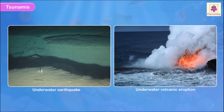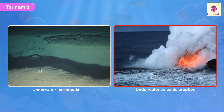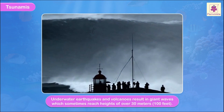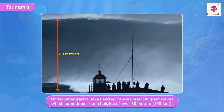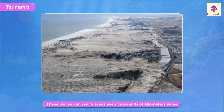Tsunamis are caused by underwater earthquakes, underwater volcanic eruptions, or a landslide in an area where a huge volume of water is displaced, causing massive destruction. Underwater earthquakes and volcanoes result in giant waves which sometimes reach heights of over 30 meters, that is 100 feet. When these huge waves crash ashore, they often cause widespread destruction, and can reach areas even thousands of kilometers away.